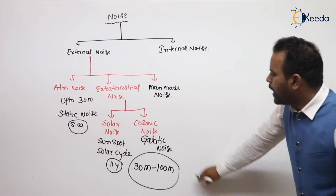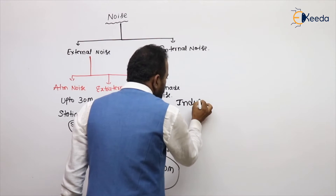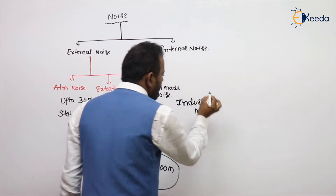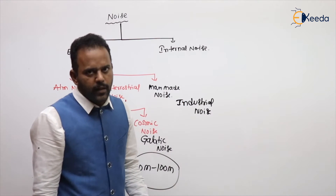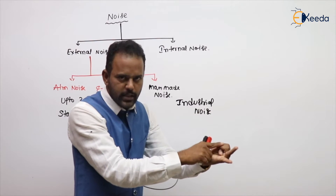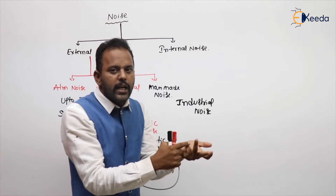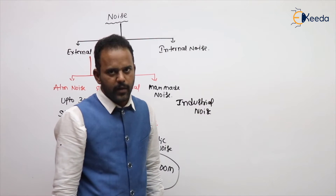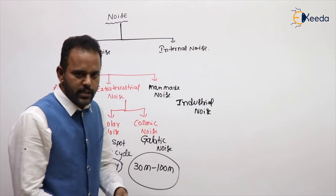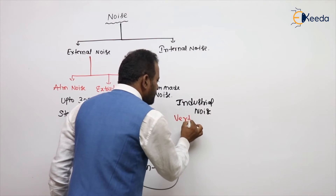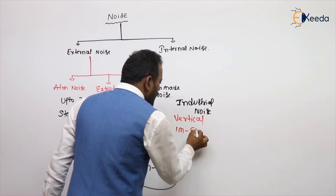Coming to man-made noise — also called industrial noise — it is caused by unwanted electrical pickups from generators, alternators, motors, leakages from transmission lines, electrical pickups from automobile and aircraft ignition systems, and fluorescent lamps. The electrical disturbance from all these things is called man-made noise. Most of the man-made noise is vertically polarized, and its effect is from 1 to 500 megahertz.